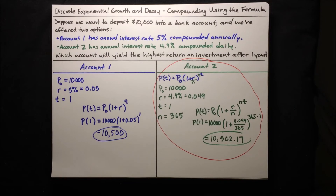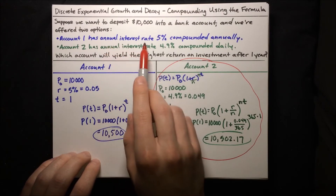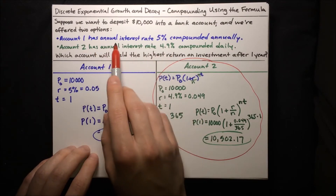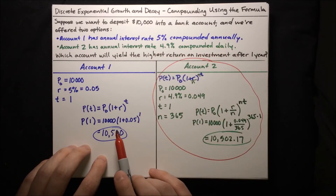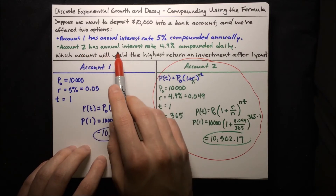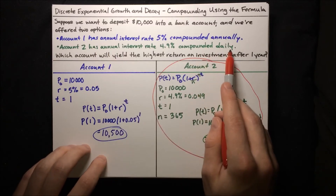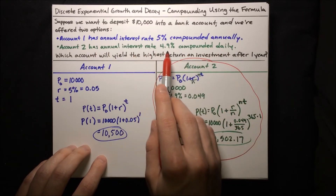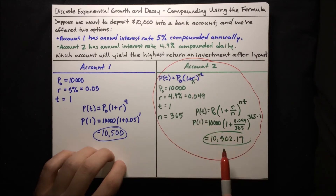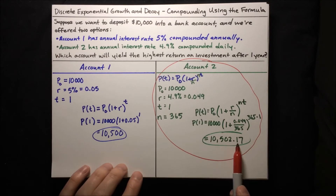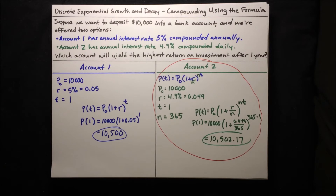There are two things to keep in mind from this example. First, it's not just the annual interest rate that determines what the better investment is. Account 1 had an annual interest rate that was higher, but it wasn't compounded very frequently, and that led it to give a lower return on investment than account 2. Account 2 had a lower annual interest rate, but it was compounded so much that the compounding actually compensated for that lower rate, making account 2 the higher return on investment. Unfortunately, there's no quick rule — you just have to go through the math.